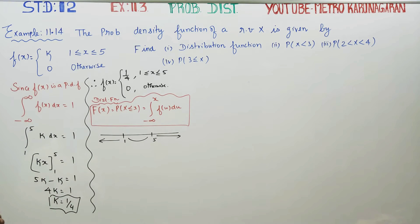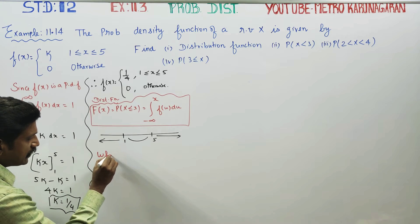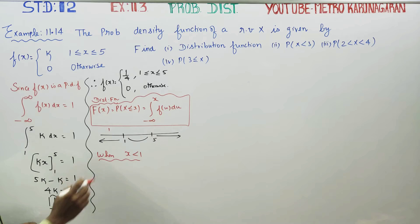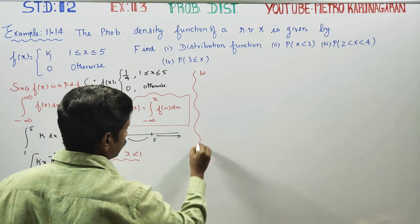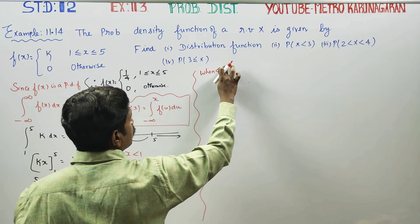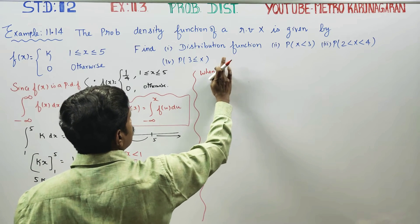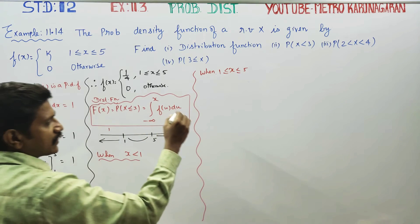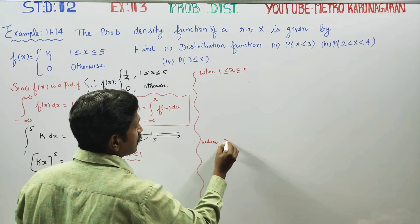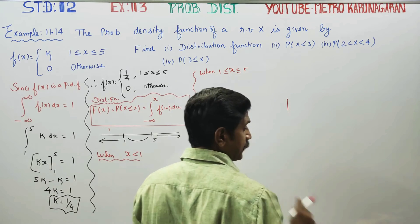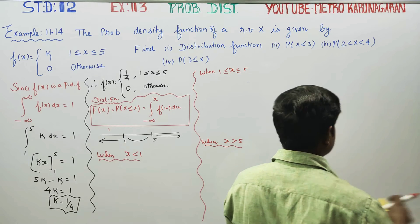Three cases will be used. When x is less than 1 — this is the first interval. When x is between 1 and 5 — this is the second interval. When x is greater than 5 — this is the third interval. The final three cases will give us capital F of x, the distribution function.